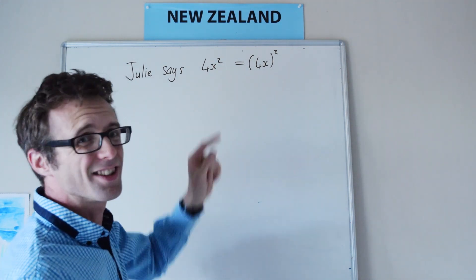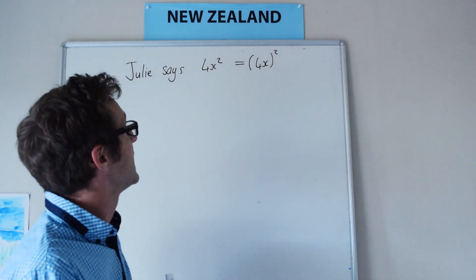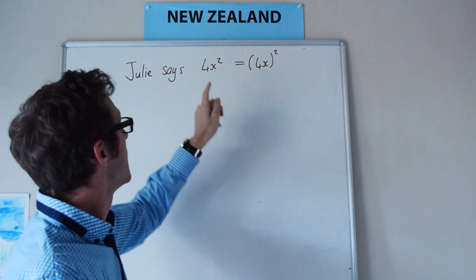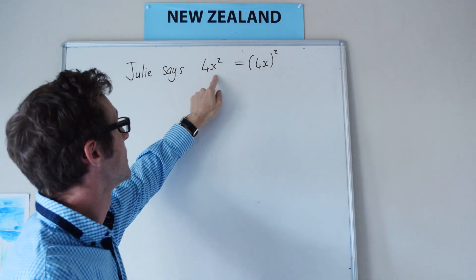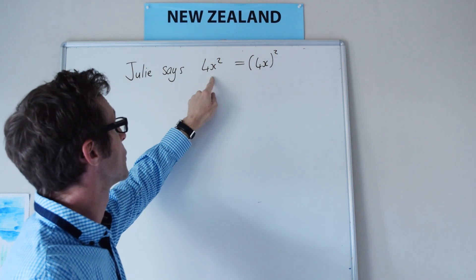4 times 2 squared, 2 squared is 4, 4 times 4 is 16.